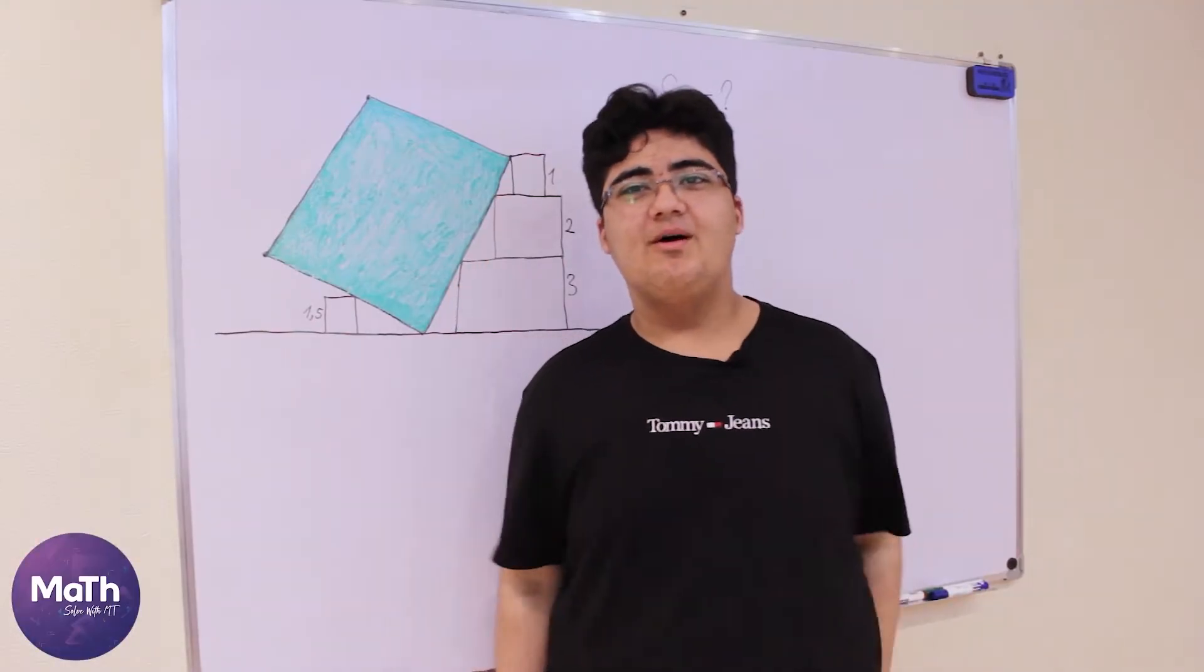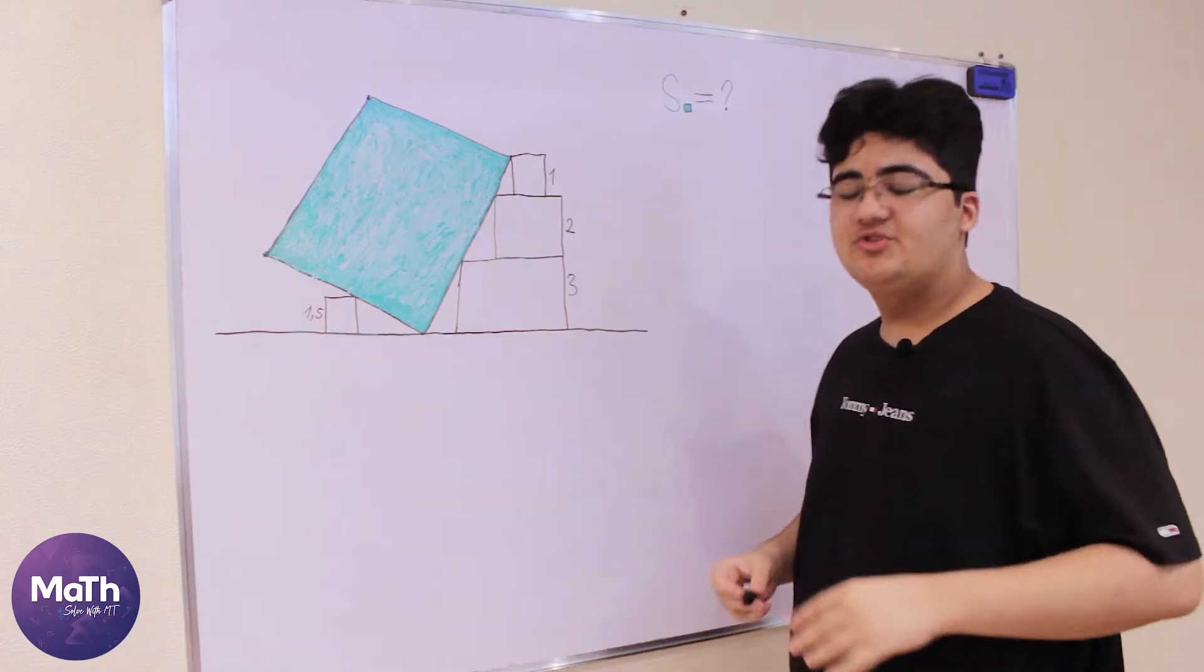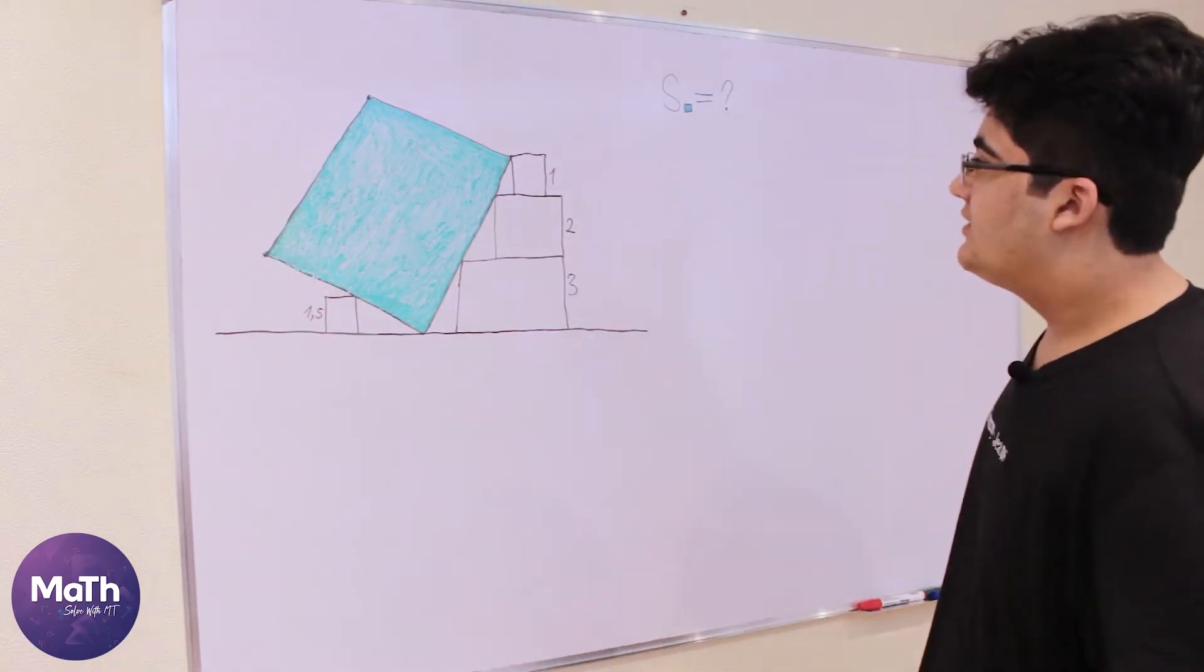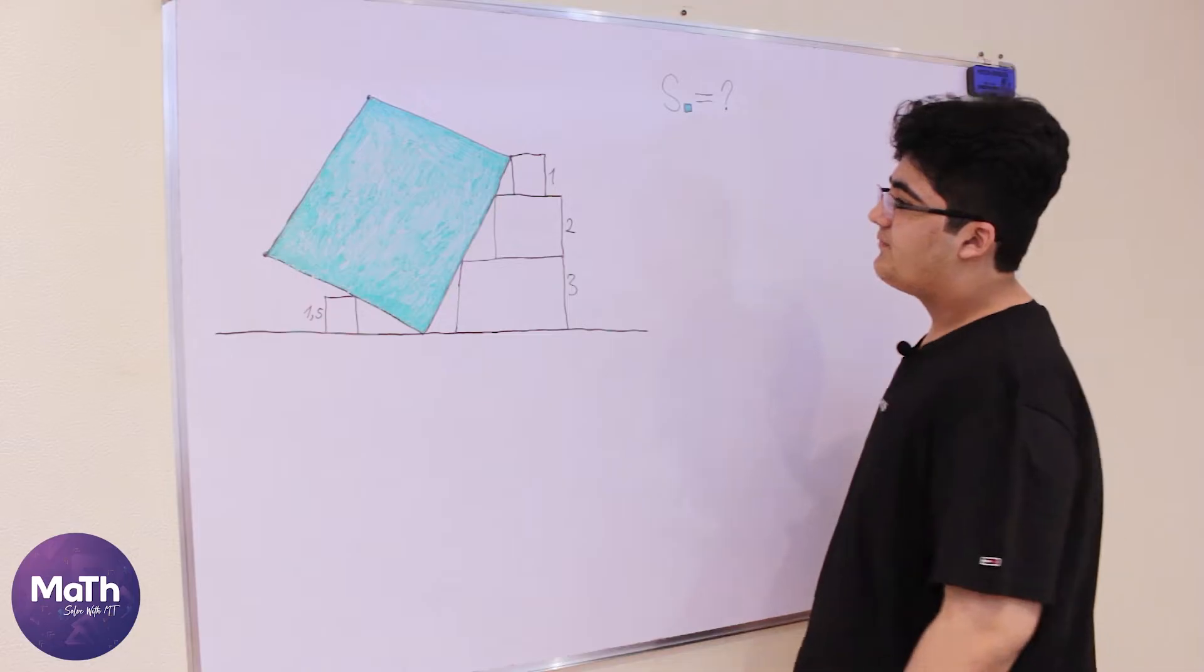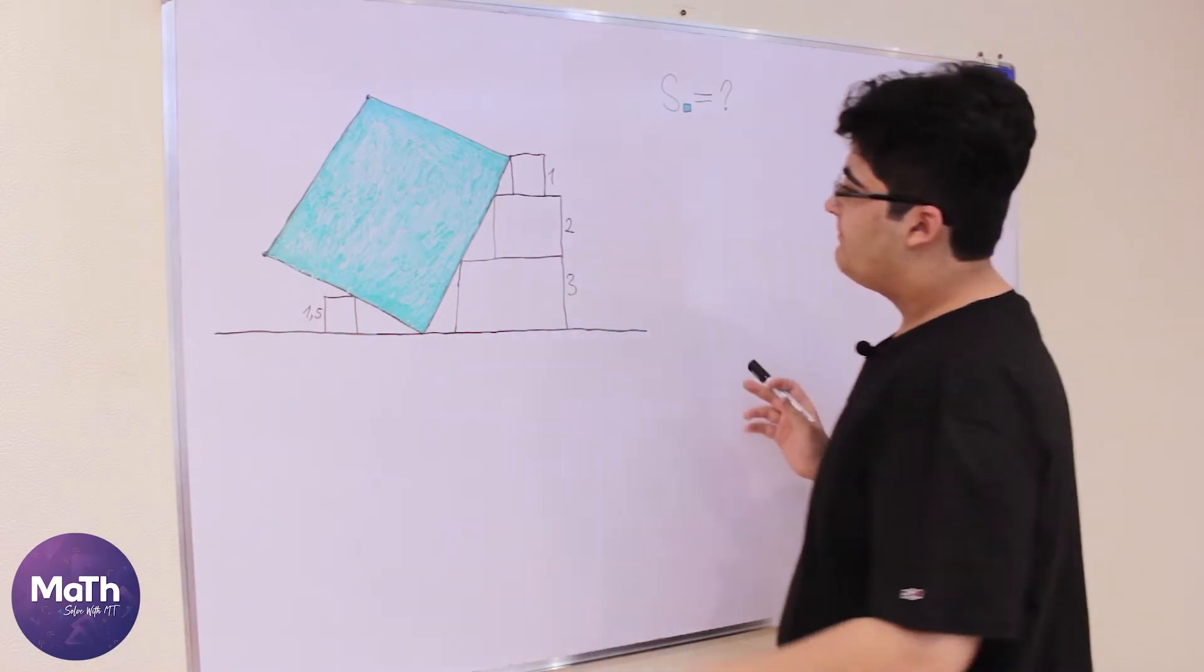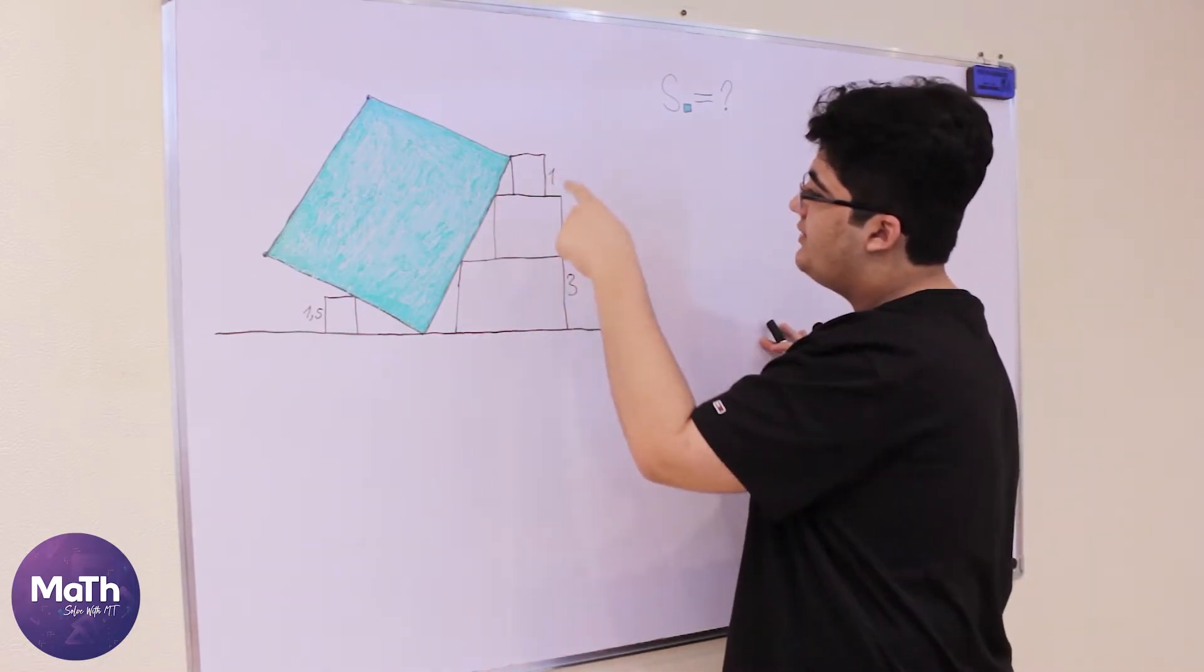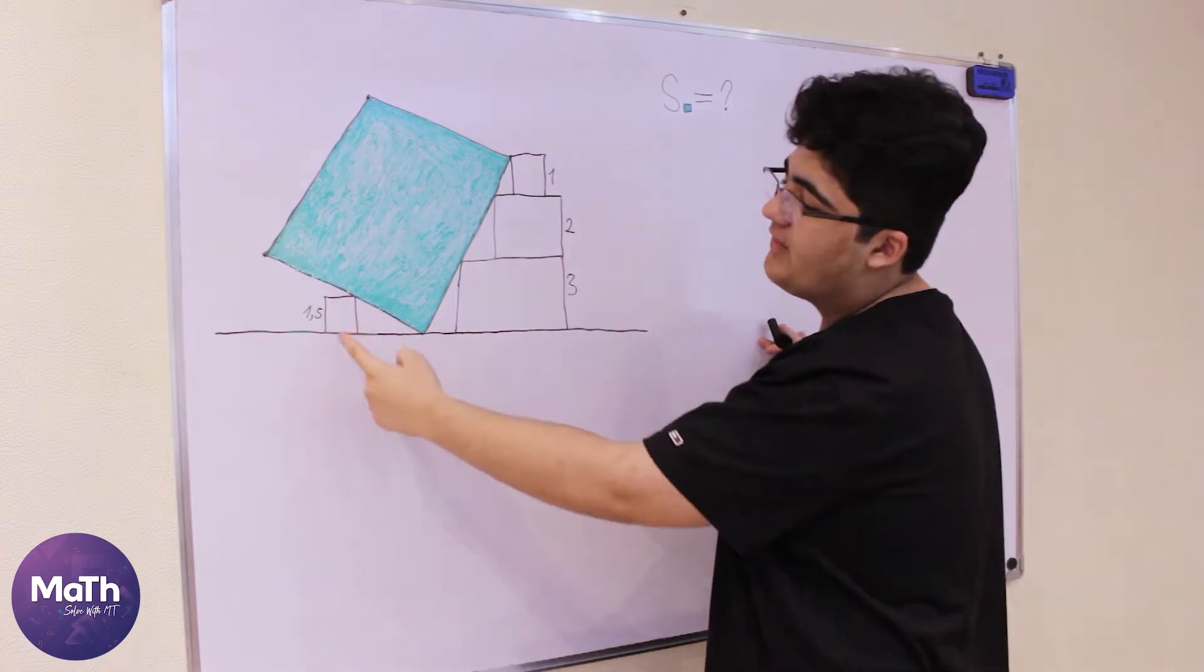Hello everyone and welcome back to my channel. Today we have a very interesting problem. We have a green square and we have another four squares with sides 1, 2, 3, and 1.5 here.